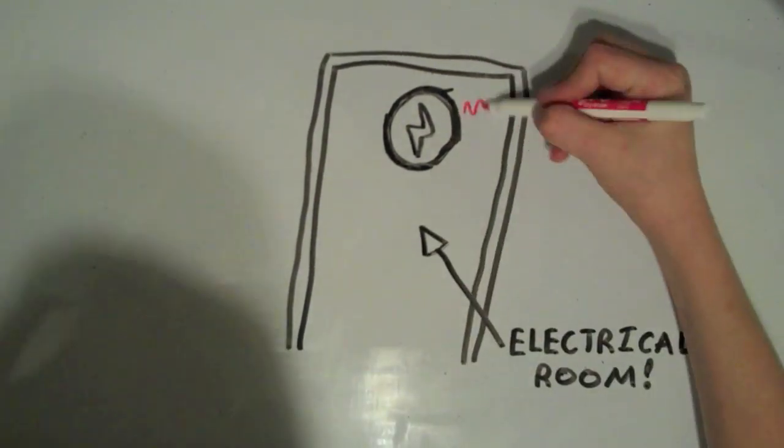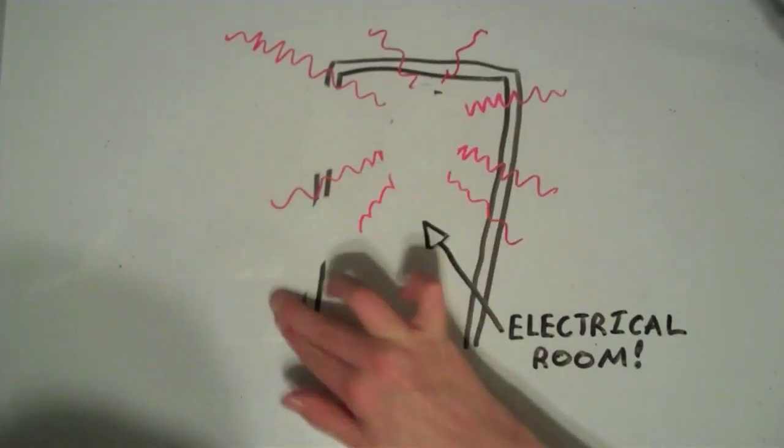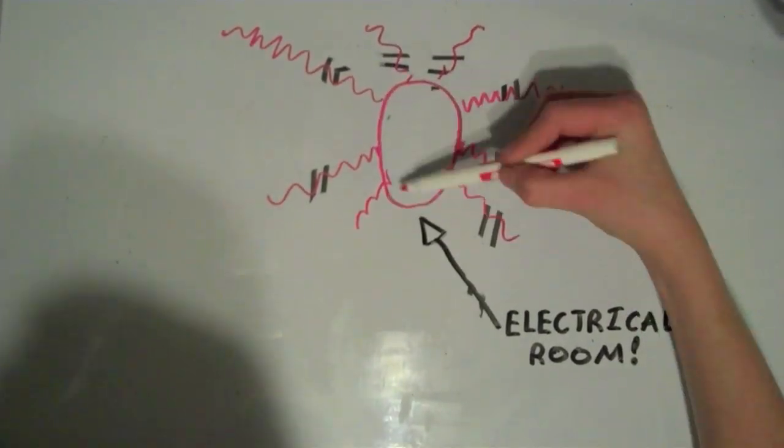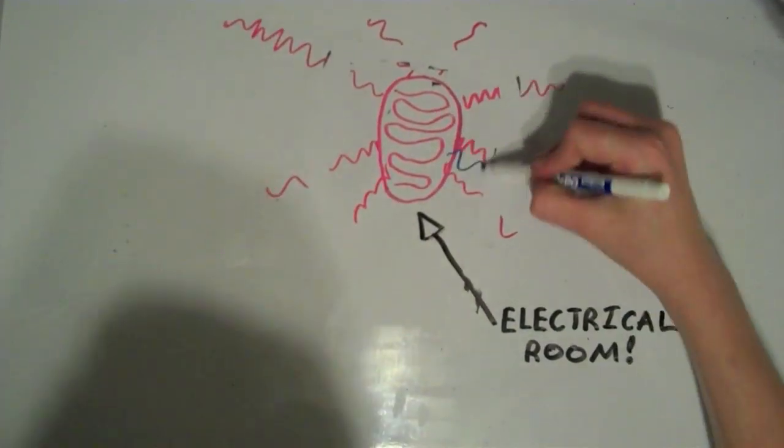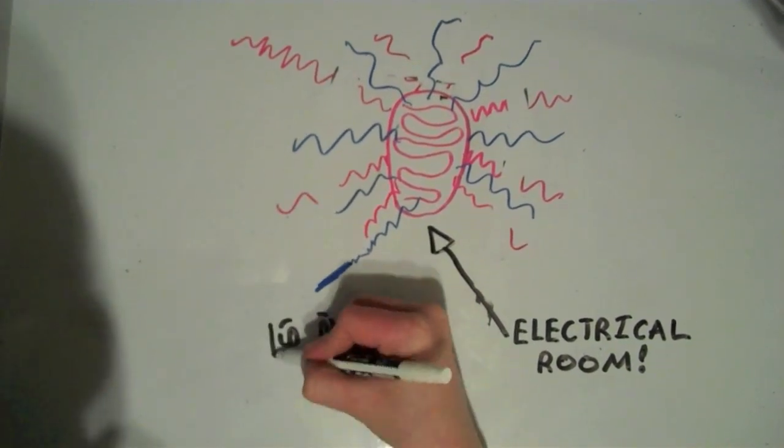As you travel through the school, you'll find a few electrical rooms that provide the school with light, plumbing, and power, just like mitochondria provide a cell with energy by gathering protein.